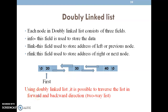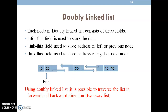Using a doubly linked list it is possible to traverse the list in forward and backward direction — two directions. We can visit each node. But in a singly linked list we can traverse in only one direction, whereas in a doubly linked list we can traverse in both directions. We also have options to insert and delete from both ends.